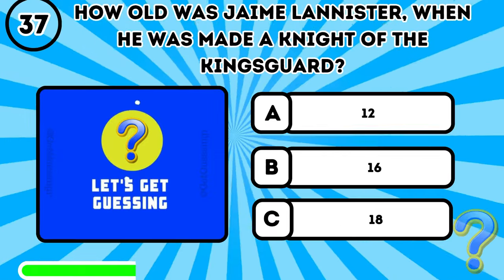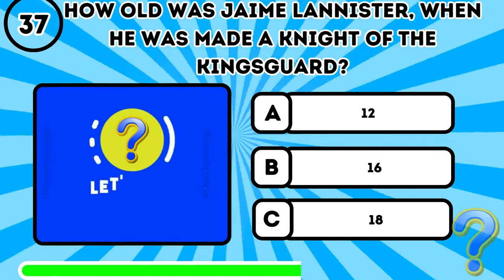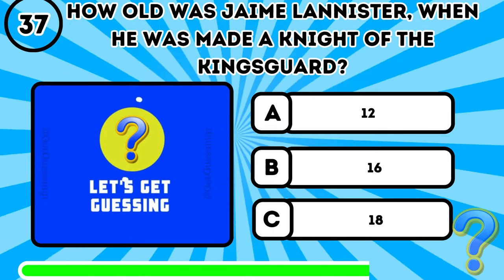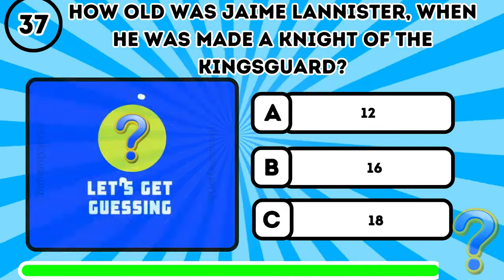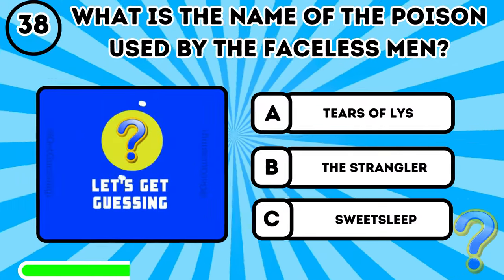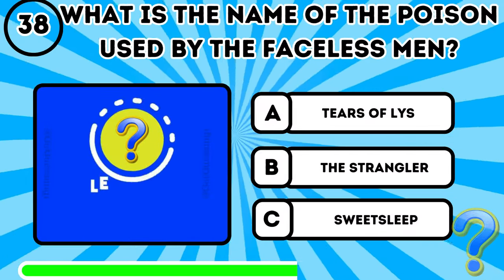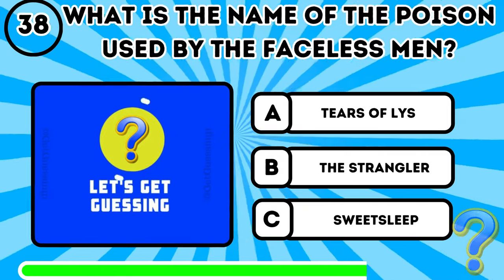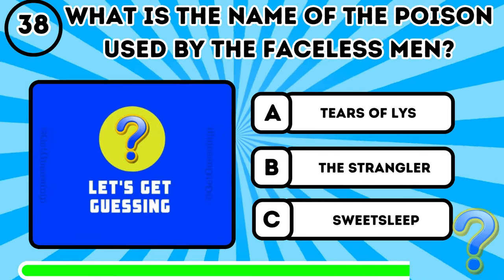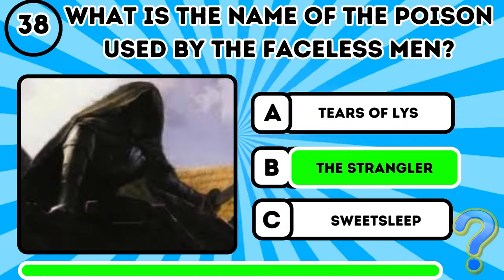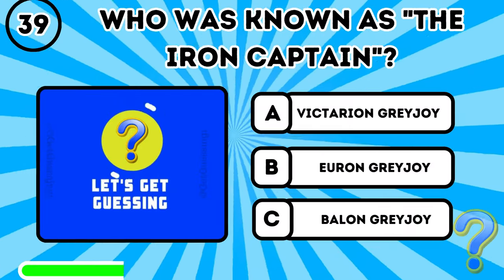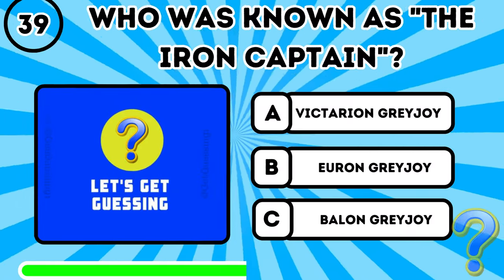Question 36: What is the name of the smith who reforged Ice into two swords? It's B, Tobho Mott. Question 38: How old was Jaime Lannister when he was made a knight of the Kingsguard? It's B, 16. Question 38: What is the name of the poison used by the Faceless Men? It's B, the Strangler.